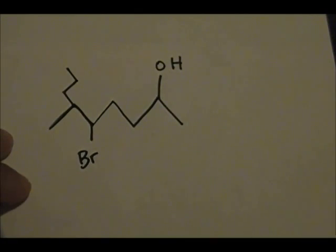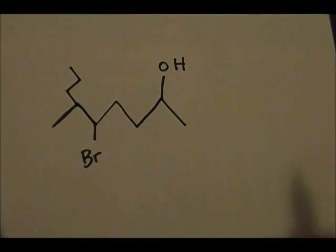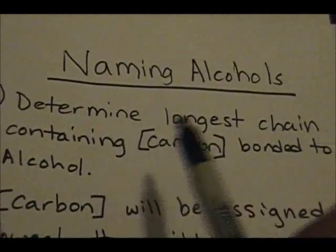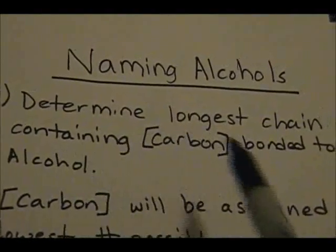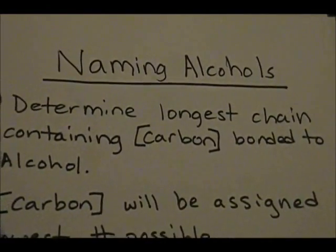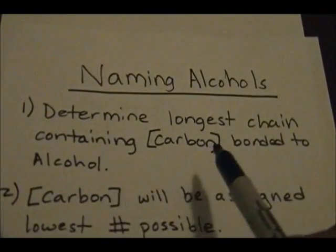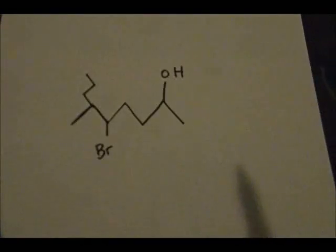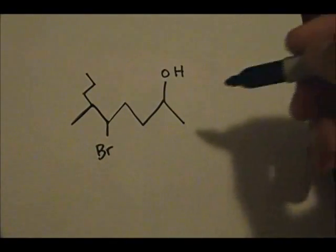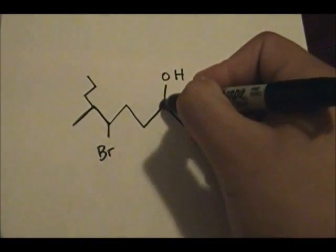Let's try to determine the name of this alcohol. Let's follow the steps I've presented. First step: determine the longest chain containing the carbon bonded to the alcohol. So we have to determine the longest chain first, and it has to include the carbon bonded to the alcohol.